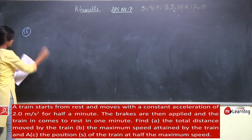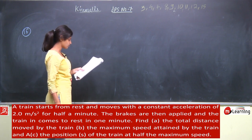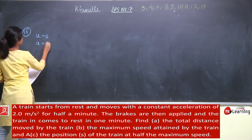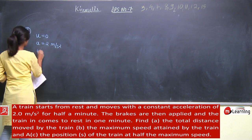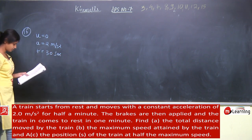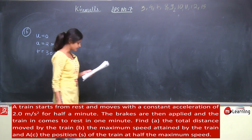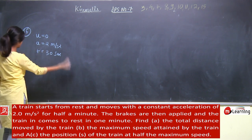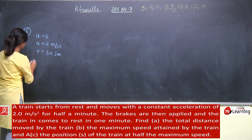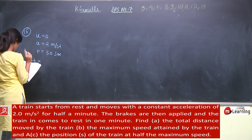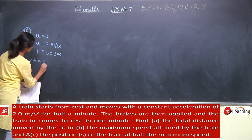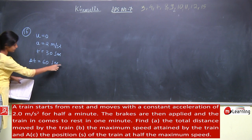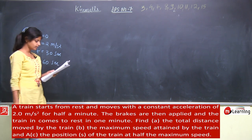Question number 15: A train starts from rest and moves with constant acceleration of 2 meter per second square for half a minute. Initial velocity is 0, acceleration is 2 meter per second square, and time is half minute means 30 seconds. The brakes are then applied and the train comes to rest in 1 minute. So at t equal to 30 seconds, the brakes are applied, and after 60 seconds the train comes to rest. Find the total distance moved by the train.